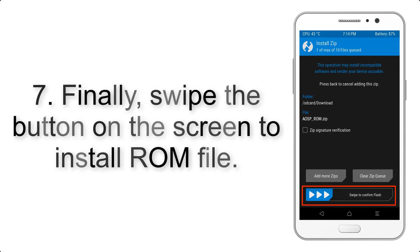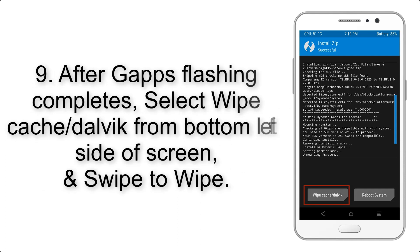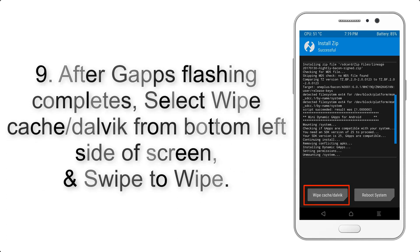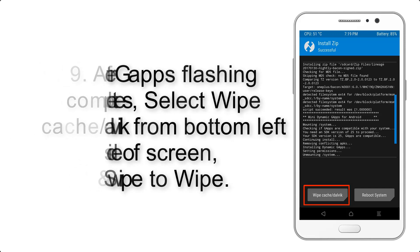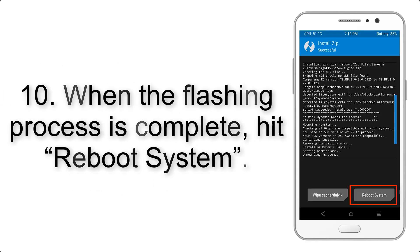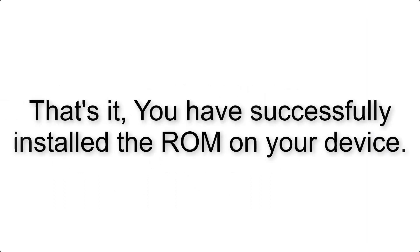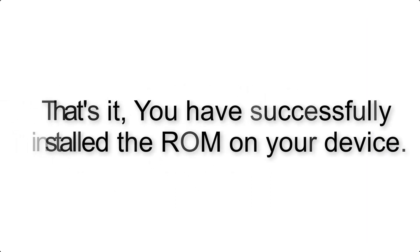Step 7: Swipe the button on the screen to install the ROM file. Step 9: After G apps flashing completes, select Wipe Cache and Dalvik from the bottom left side of the screen and swipe to wipe. Step 10: When the flashing process is complete, hit Reboot System. That's it — you have successfully installed the ROM on your device.